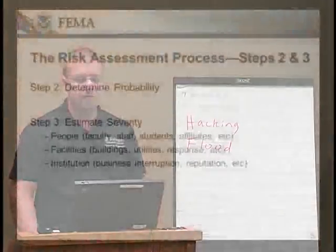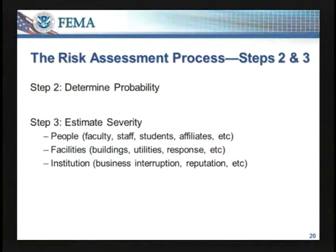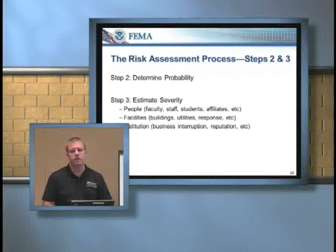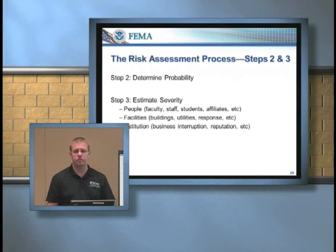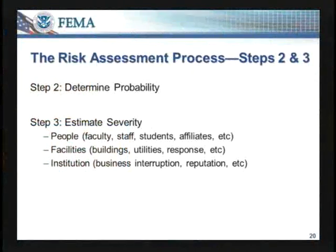Steps two and three: we need to determine probability — how likely is this event to affect us? For instance, tornadoes and thunderstorms here in the Midwest — that's very likely, it's almost a given that we'll get multiple rounds each year. Step three, you need to estimate your severity. We need to think about the people — faculty, staff, students, visitors. How would a thunderstorm affect them in an academic building versus out at a football stadium? Those are two different levels. For facilities, we need to think about how the hazard will affect our buildings, utilities, and response. A snow or ice storm is going to take a lot of resources to clear the campus to be safe for everyone.